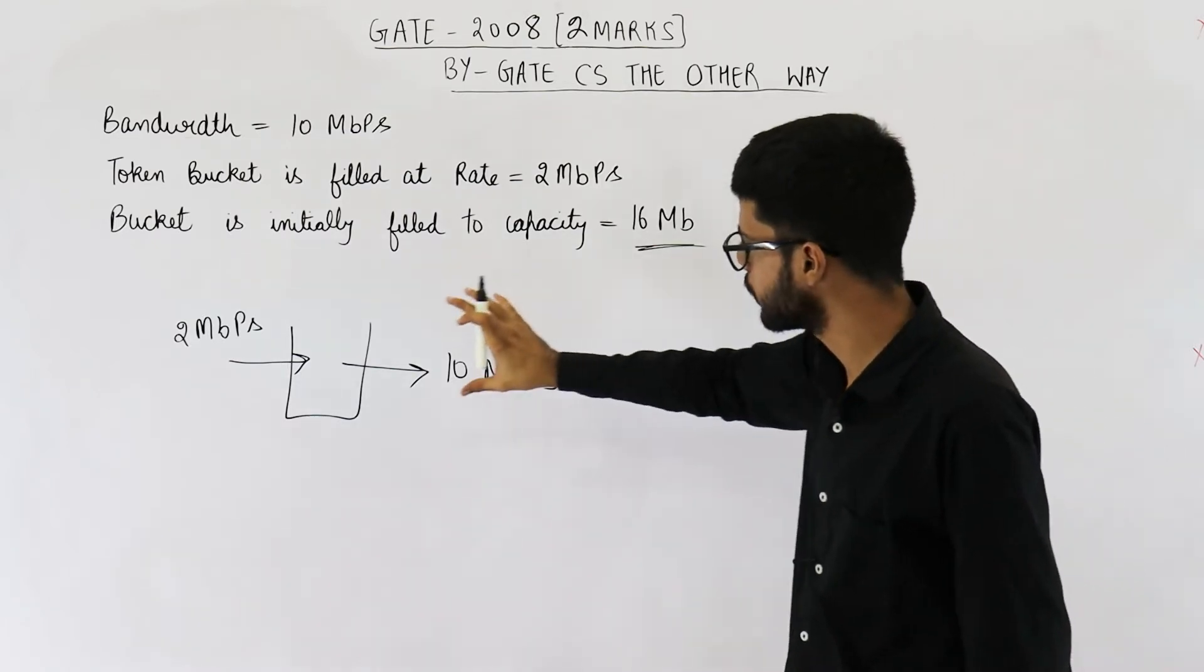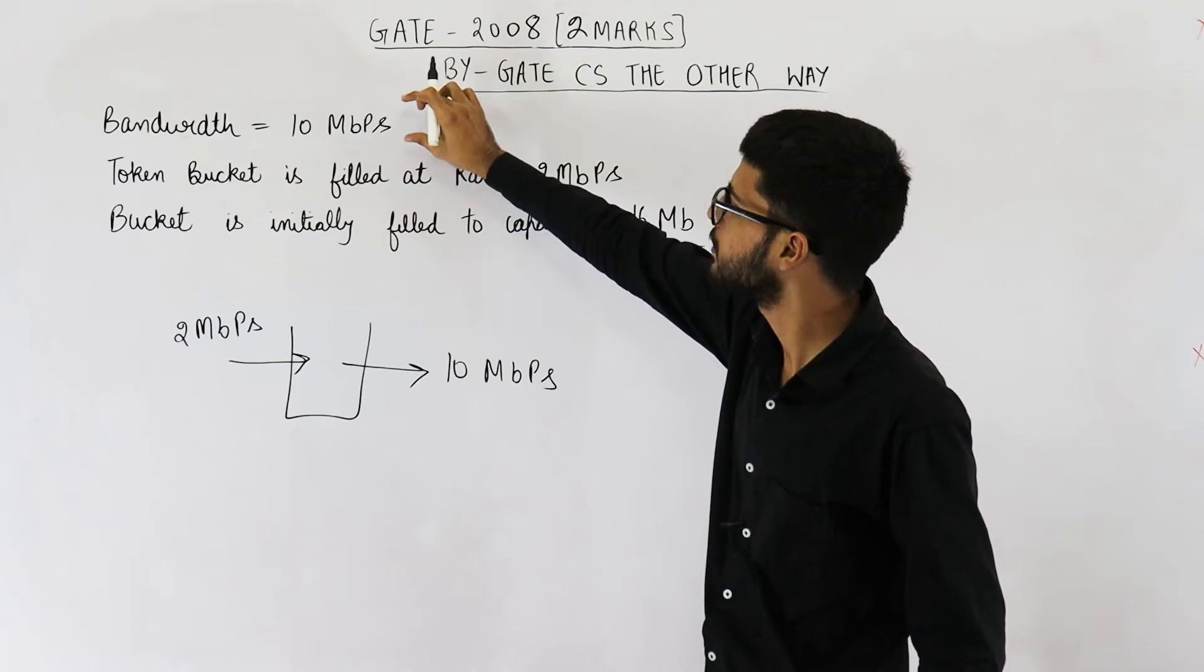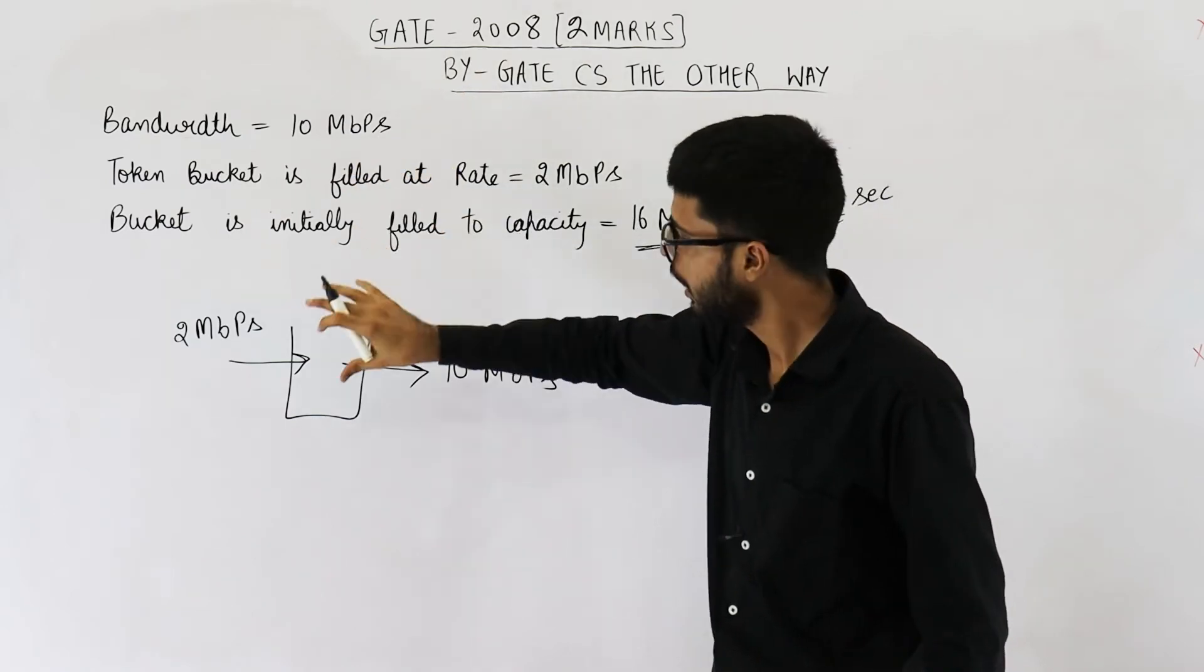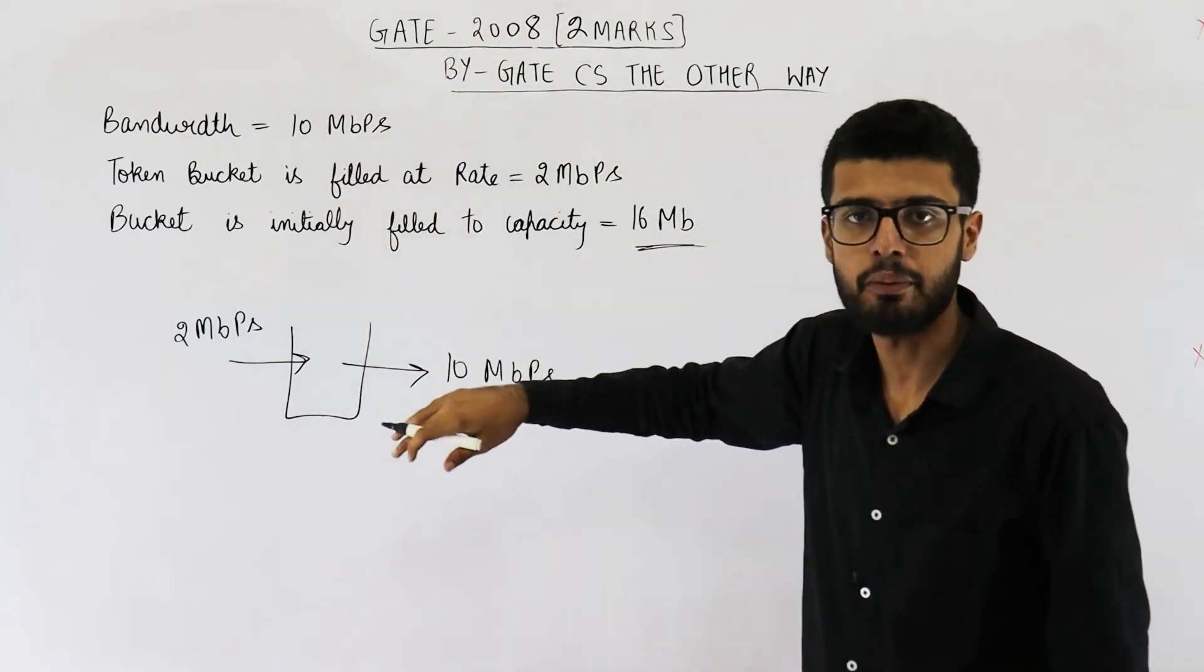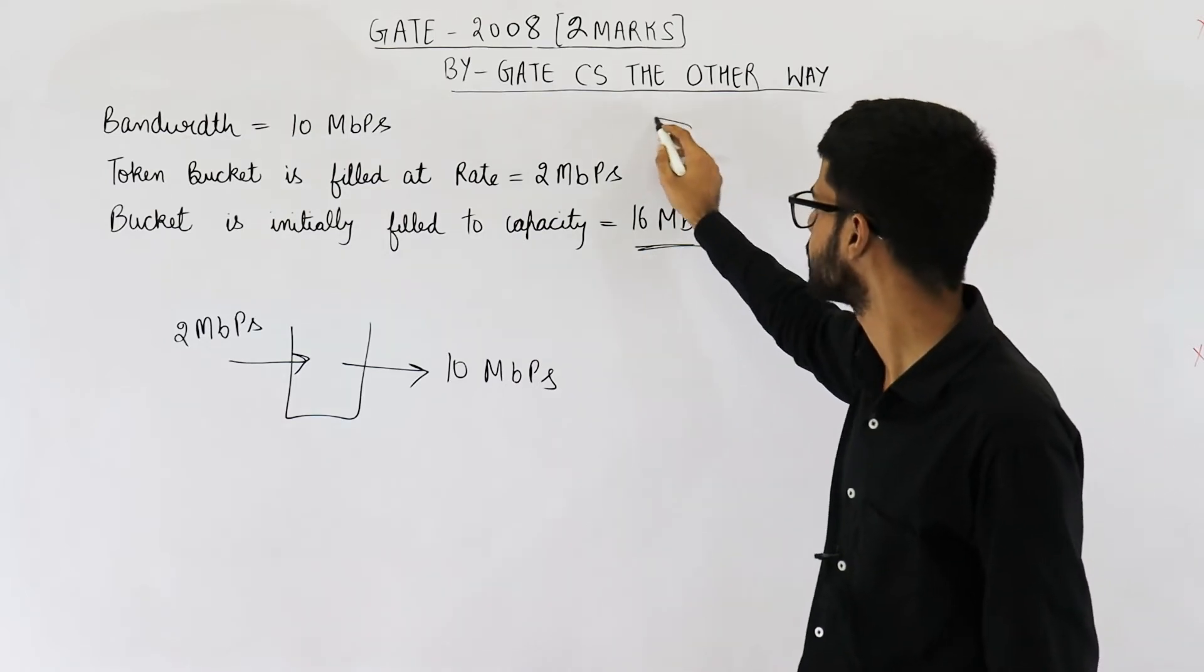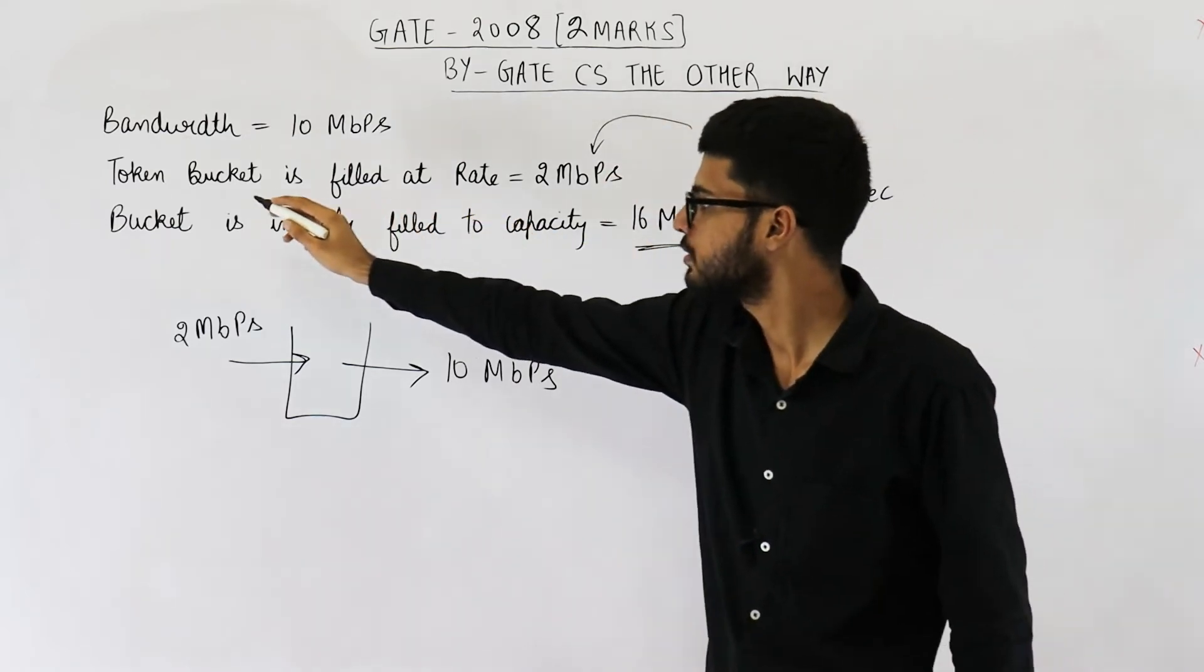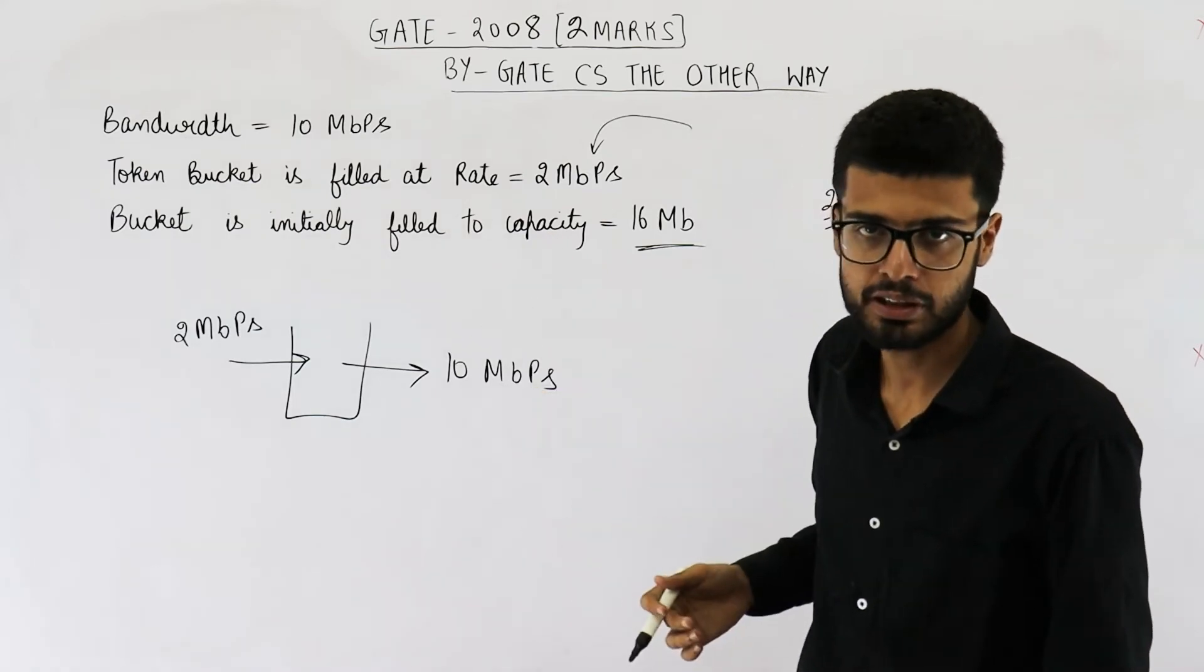For 2 seconds, you will have tokens inside this bucket, so you can send data at 10 Mbps. After 2 seconds, the bucket will be empty. So after 2 seconds, you have to send data at this speed, that means the rate at which new tokens are being generated.